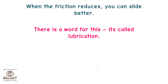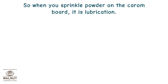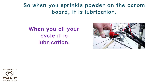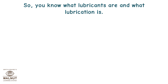There is a word for this — it's called lubrication. Lubrication means applying a substance to reduce friction and allow smooth movement. So when you sprinkle powder on the carom board, it is lubrication. When you oil your cycle, it is lubrication. When they grease a machine, they basically put some lubricant where the moving parts are. So now you know what lubricants are and what lubrication is.